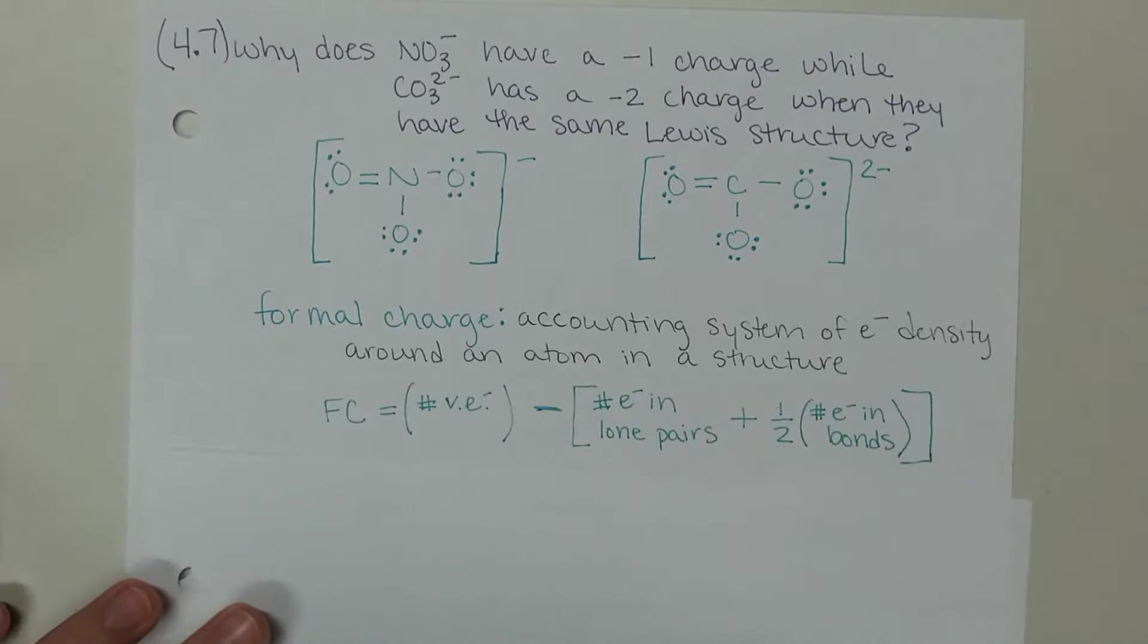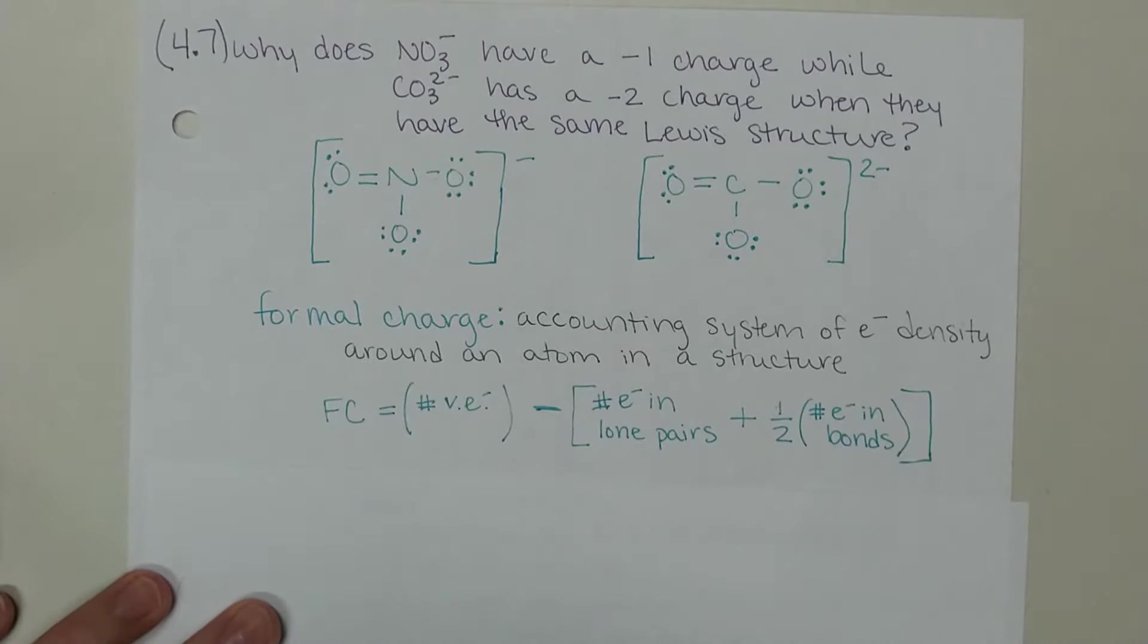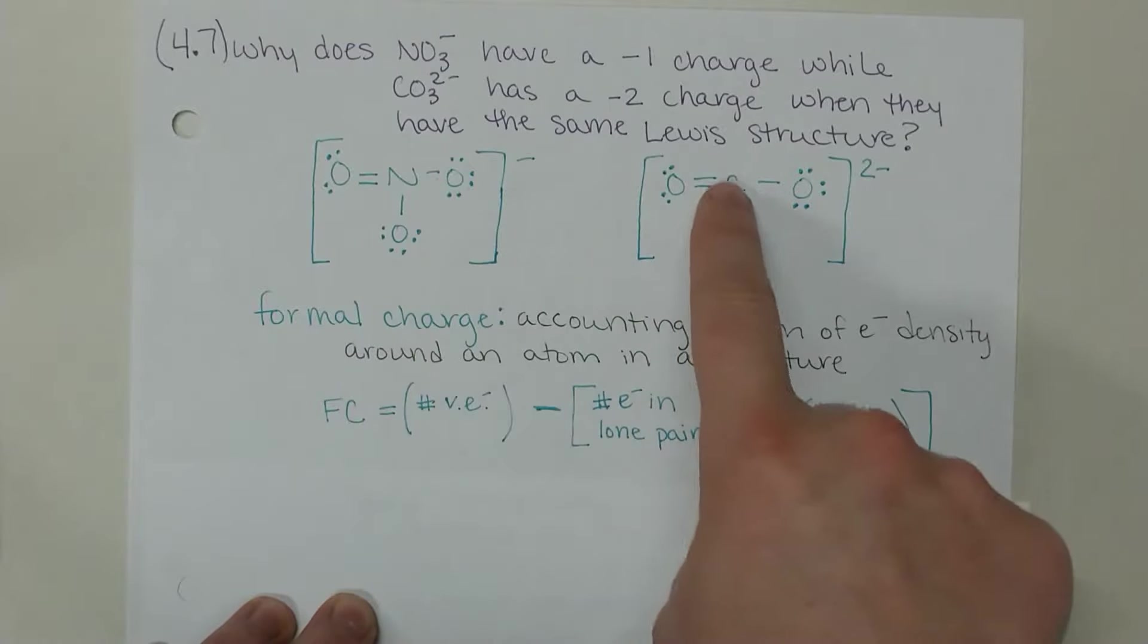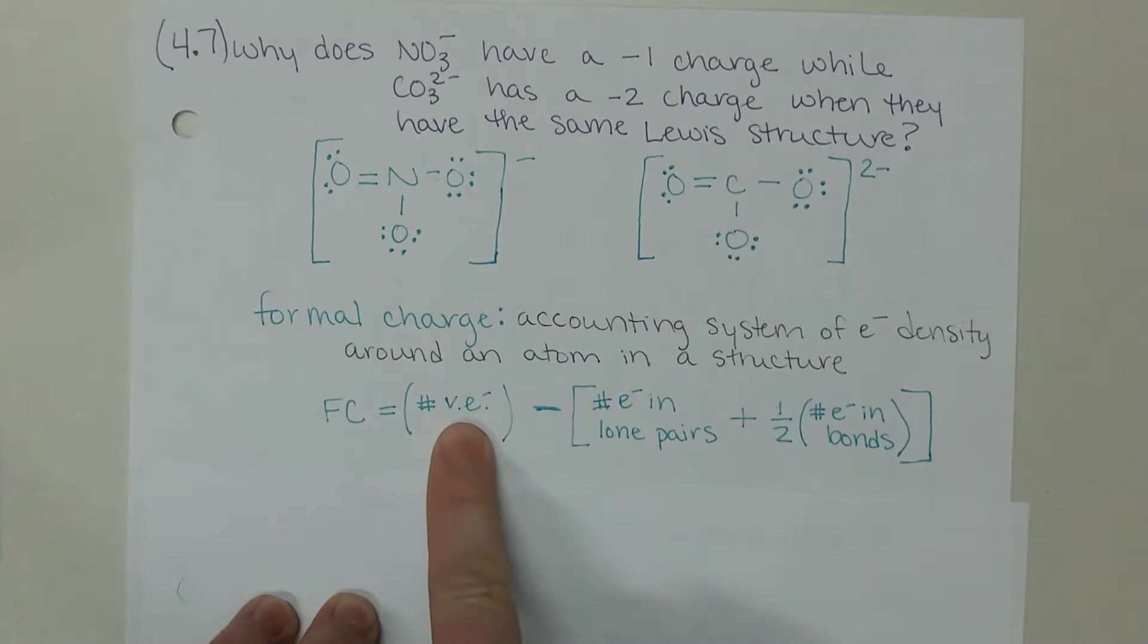To calculate formal charge, we start with the number of valence electrons, and we do a formal charge per atom. Each atom in the structure is going to have a formal charge. We start with the valence electrons of that atom and subtract the number of electrons that are in lone pairs, and then half of the electrons in the bonds.